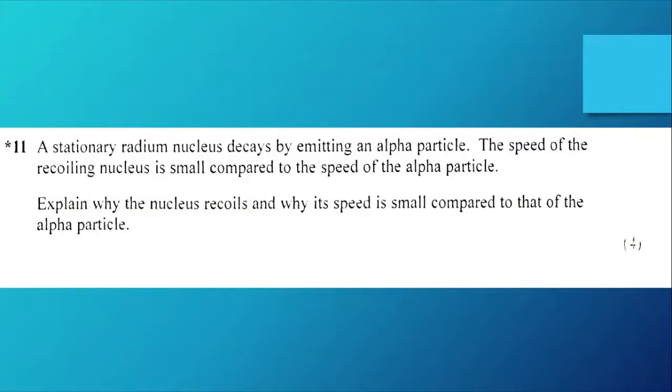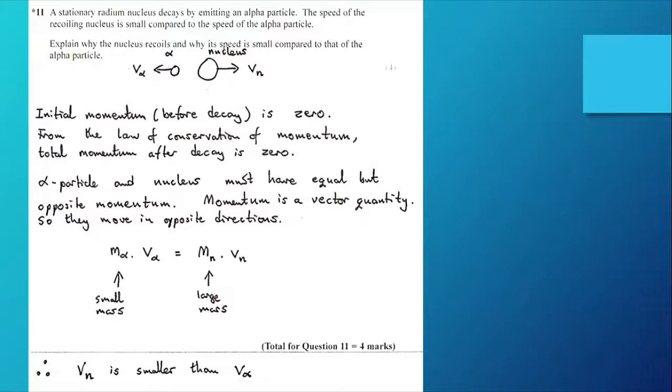I think you know, perhaps intuitively, what we might be expected to say, but let's do it anyway. I've shown my little diagram with the alpha particle moving off to the left, the nucleus recoiling to the right. vn is the velocity of the nucleus. The initial momentum before the decay is zero. From the law of conservation of momentum, the total momentum after decay would also be zero.